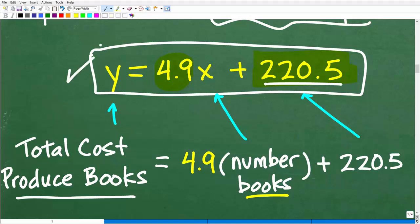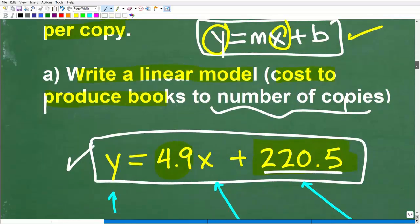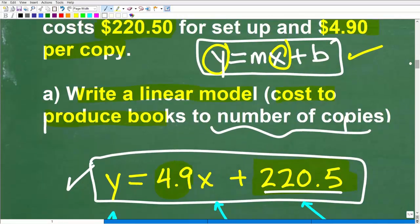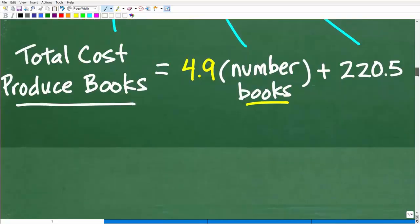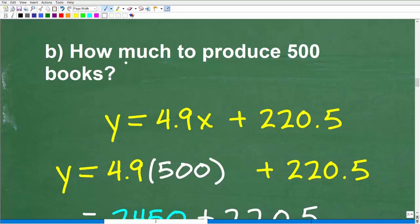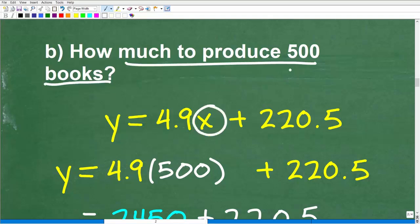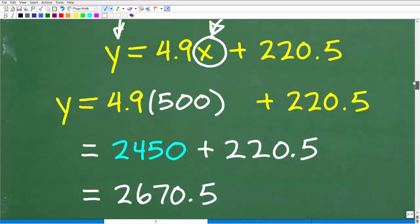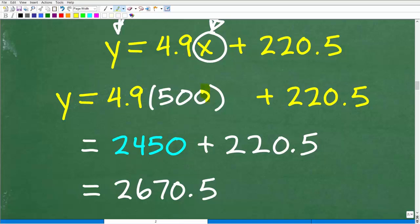Once we have our linear model here, our linear function, then we can answer the rest of these questions pretty easily. So let's go ahead and move on to part b. Part b says how much to produce 500 books. So what's our input? Our input is going to be 500. And then when we plug in 500 for x into this linear function, it's going to give us our total cost. So it's pretty simple. This is how we use our linear model.